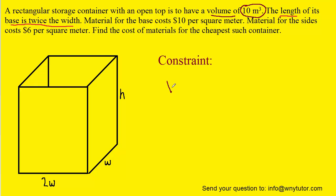Now the volume of any rectangular storage container is simply equal to its length times its width times its height. Now looking at our diagram we have the length marked as 2w, the width marked as w, and the height marked as h. So we can fill those into our volume equation.